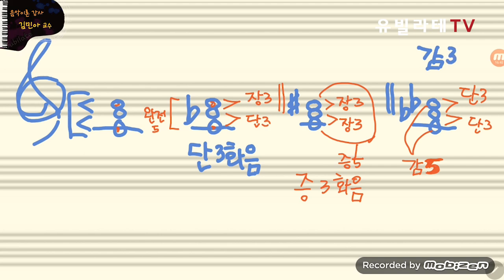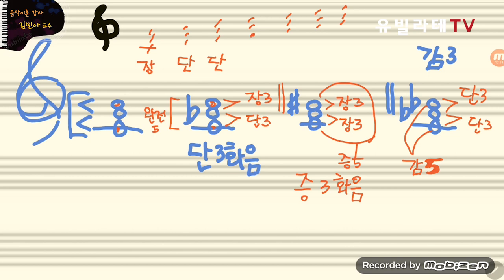모든 음악을 구성하는 데서 가장 기본적인 삼화음이 이 네 종류예요. C 메이저 기준으로 도-레-미-파-솔-라-시 각 음부터 쌓아올린 삼화음을 보면: 도부터는 장, 레부터는 단, 미부터는 단, 파부터는 장, 솔부터는 장, 라부터는 단, 시부터는 감이에요. C 메이저 안에는 증이 없어요. 장조에는 장, 단, 감 세 가지 성질밖에 없습니다.